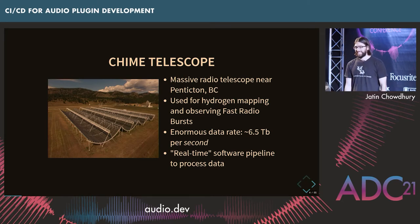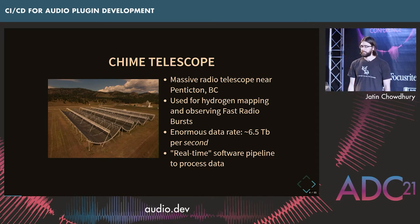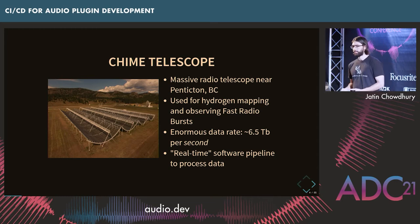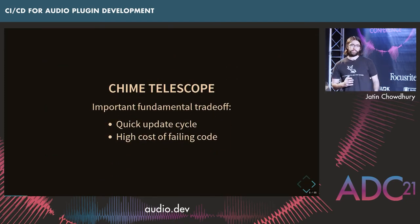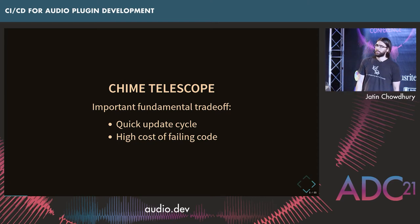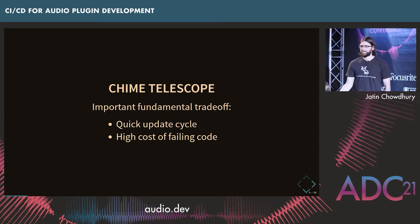It's not really practical to try to store all of that data. The project I worked on back in 2017 was to build a real-time software pipeline — not real-time on the scale we're used to in audio, but over the course of a few minutes — to process data coming in from this telescope, decide what is worth saving and what can be thrown away. This was also technically challenging because you want to update the software pipeline very quickly so scientists can run experiments quickly, but if your code fails, you could lose a lot of data and potentially ruin very expensive experiments.